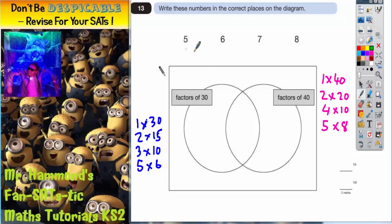So let's check each number in turn. Let's start with the number 5. Well 5 is a factor of 30 but it is also a factor of 40 so it's in both lists of factors. So 5 needs to go in the overlapping bit. So that's 5 done.